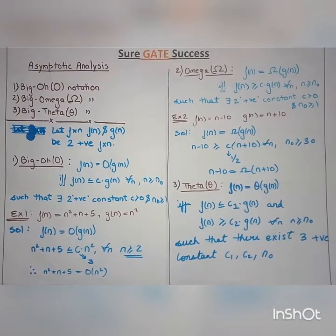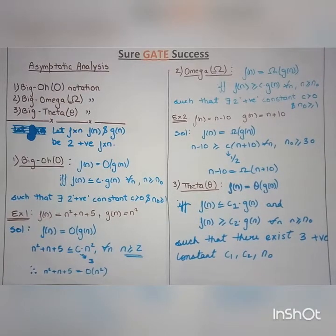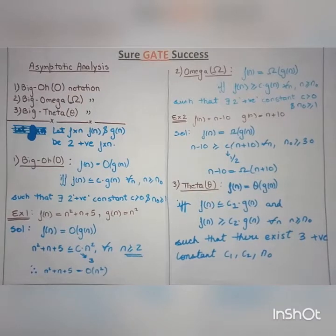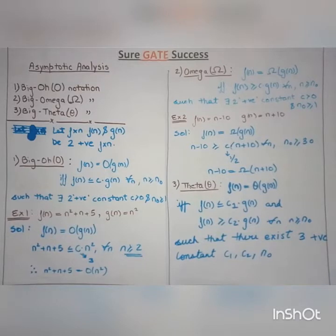Hello guys, welcome to Sure Gate Success. This video is totally about asymptotic analysis. It plays a crucial role in GATE and it contains marks too. Majorly we have three kinds of notations: one is Big O notation, another is Big Omega notation, and the third one is Big Theta notation.